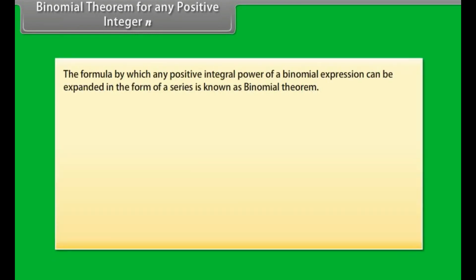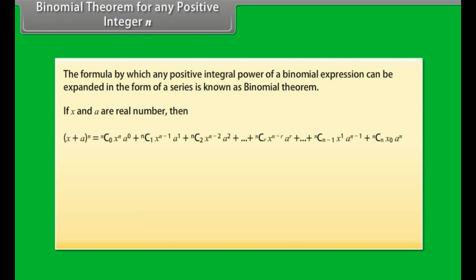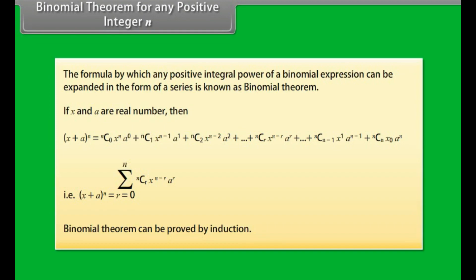Binomial theorem for any positive integer n: The formula by which any positive integral power of a binomial expression can be expanded in the form of a series is known as binomial theorem. If x and a are real numbers, then (x + a)ⁿ = Σ(r=0 to n) nCr · x^(n−r) · aʳ. Binomial theorem can be proved by induction.